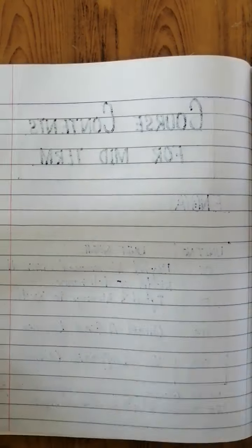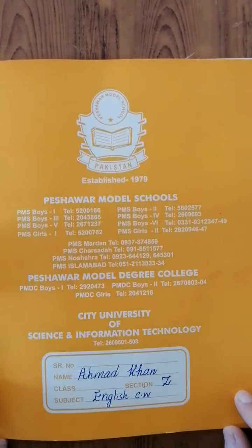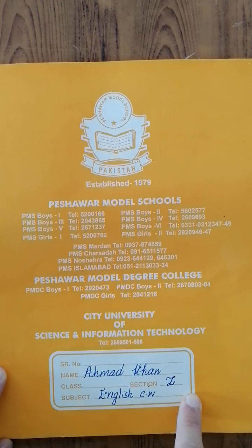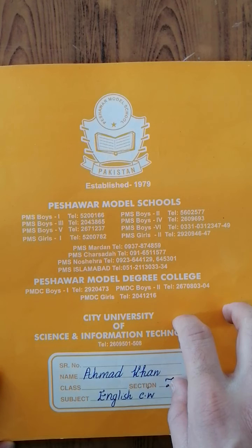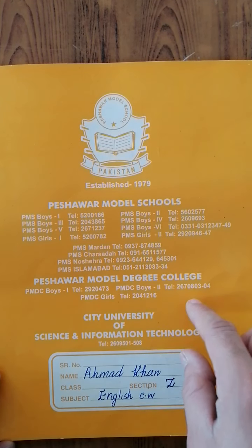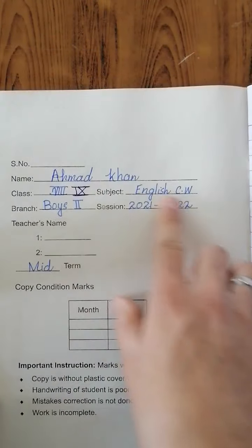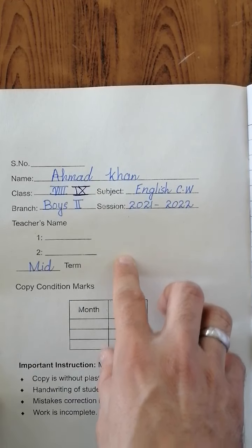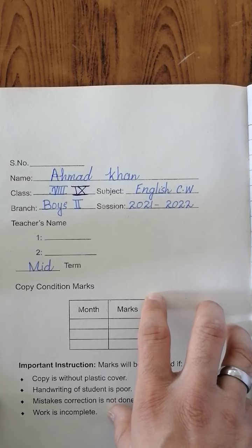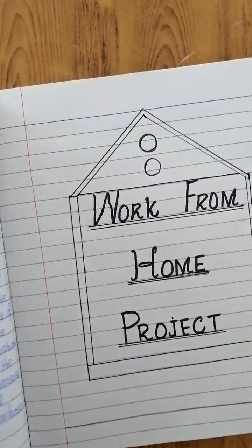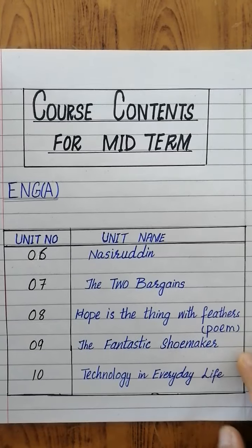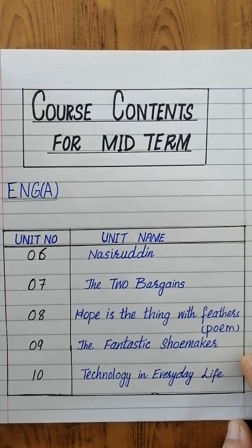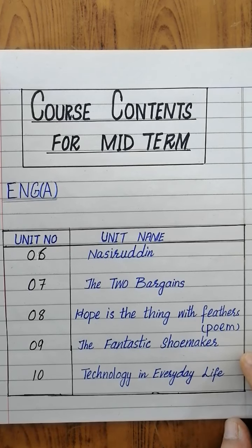Once again, be careful about the particulars. You can pause the video and follow instructions side by side. Do not commit any mistake or write anything wrong in the notebook. Leave the first page empty and come to the course contents for midterm. This was all about filling out the particulars, writing down the course contents, the handwriting page, and how to start your work from home project. Thank you very much.